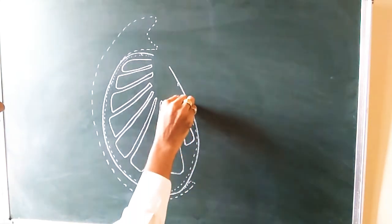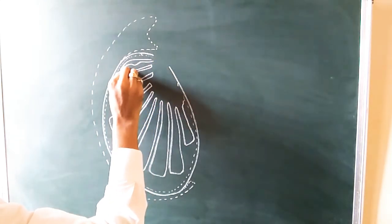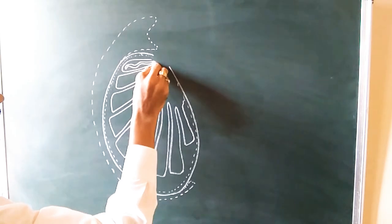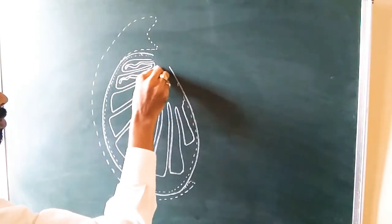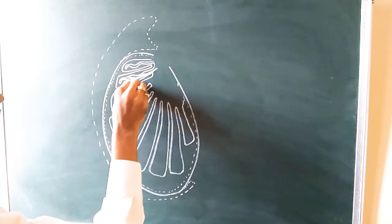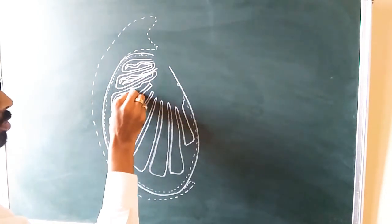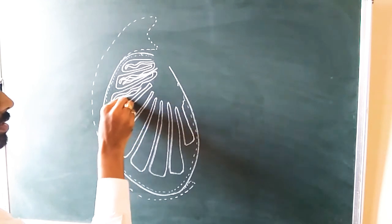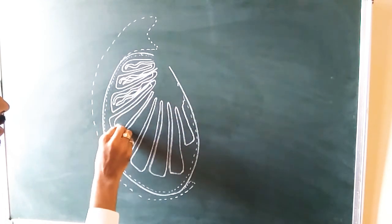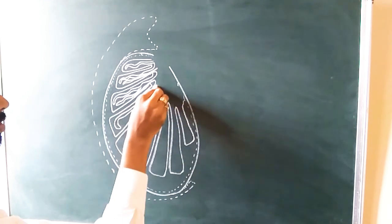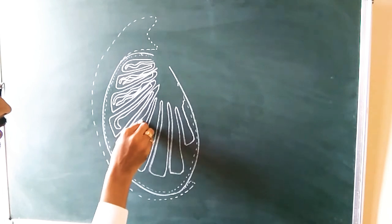Then you can show the diagram of seminiferous tubules inside each testicular lobule. Around one, two, or three seminiferous tubules are there, so you can show them like this. If you are getting confused, you can draw a single one only — if you draw it clearly, you can understand it properly.